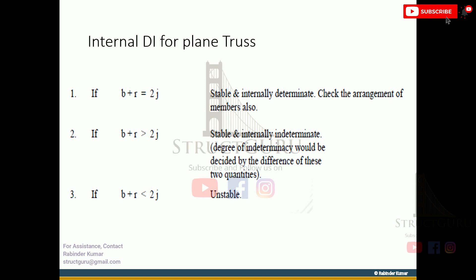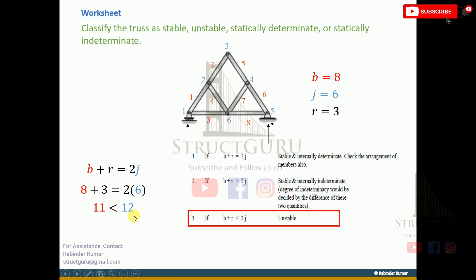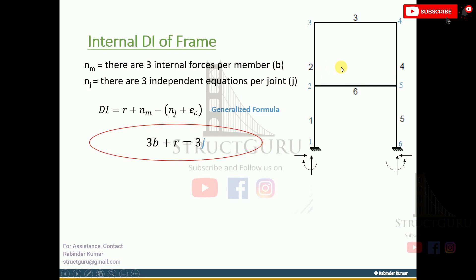Let's discuss one example. This is a truss with a roller support on this side and pin support on this side. We need to count the members: there are eight members. We need to count the joints: there are six joints. Total number of reactions are three. Based on the formula b plus r equals 2j, we insert the values. b is 8, r is 3, j is 6. This becomes 11 is less than 12. So based on the condition, if b plus r is less than 2j, this is internally unstable.